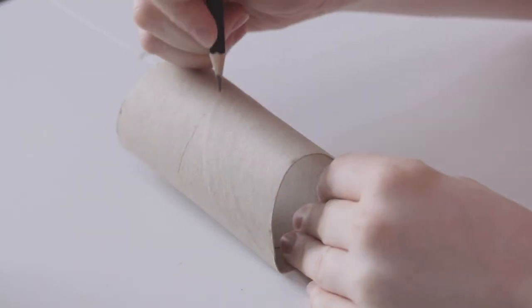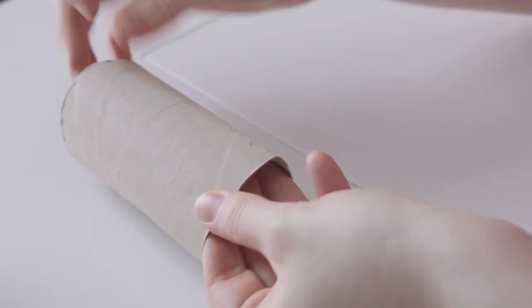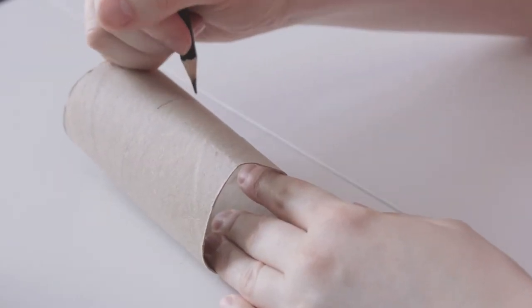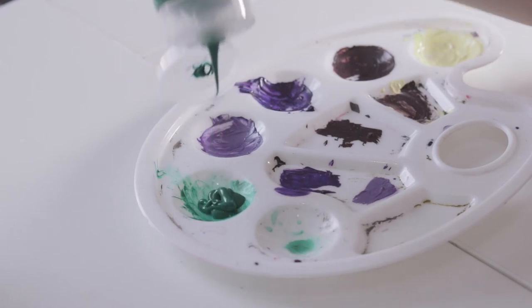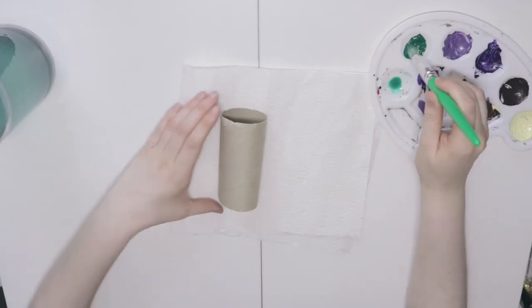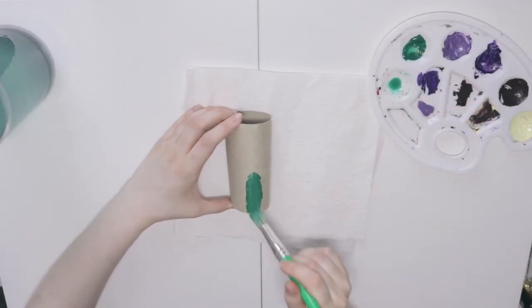Firstly, draw a line around the middle of the cardboard tube, then paint the tube on one side of the line. Choose whatever colour you like. I've gone for my favourite colour, green.